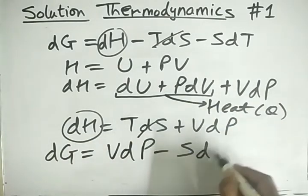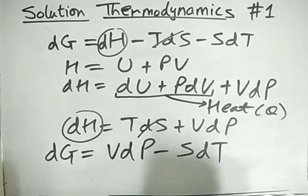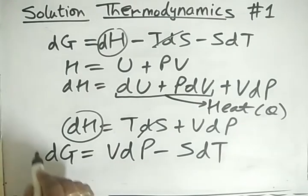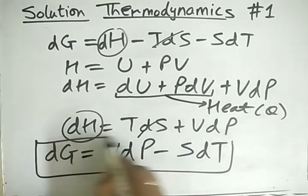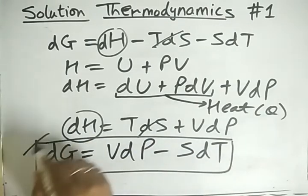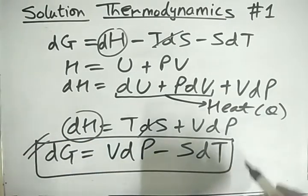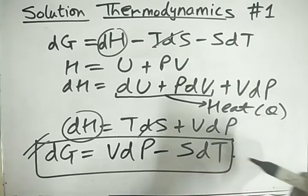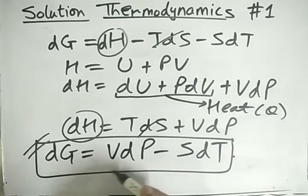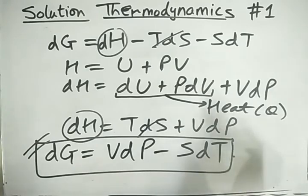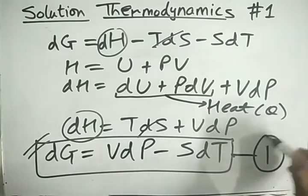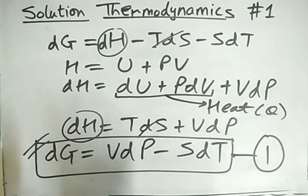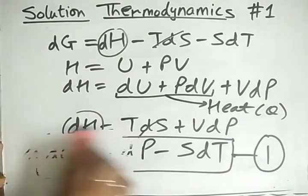Substituting back, dG = T·dS + V·dP − T·dS − S·dT. The T·dS terms cancel out, and we finally get dG = V·dP − S·dT. This equation is really really important — it will be used various times and forms the base for getting many other formulas. Just remember this — it is the most important formula for now.